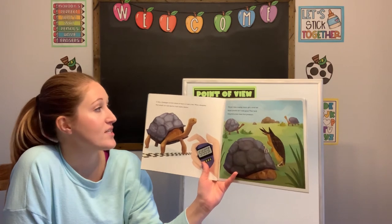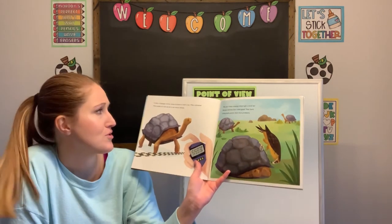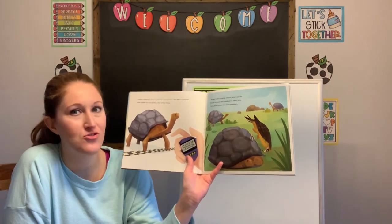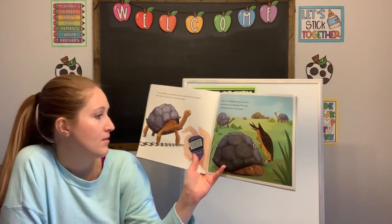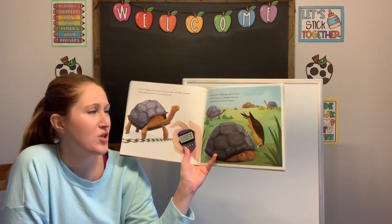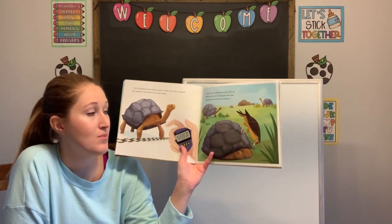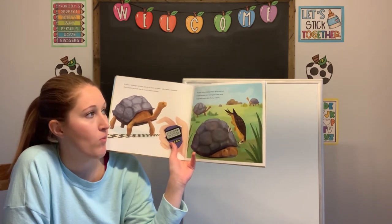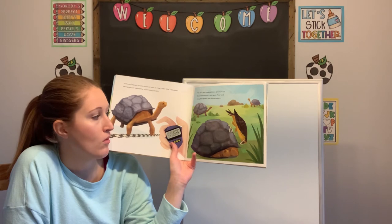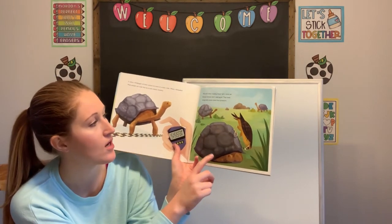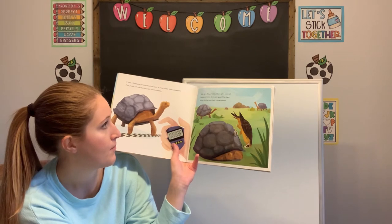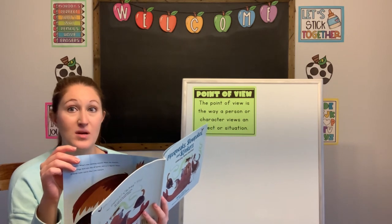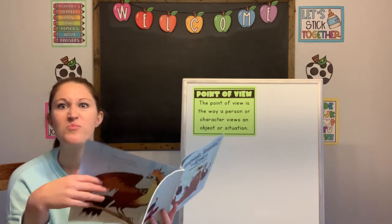It takes a Galapagos tortoise almost six hours to travel a mile — what a slowpoke. Most people can walk that far in just 20 minutes. Why don't these creeping critters get a move on? Well, because tortoises don't need speed. Their hard, strong shells protect them from predators. Do you think you could beat a tortoise in a race? Probably.